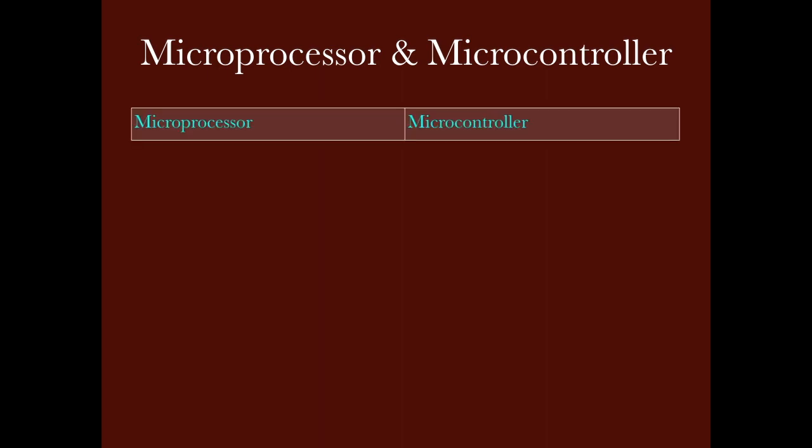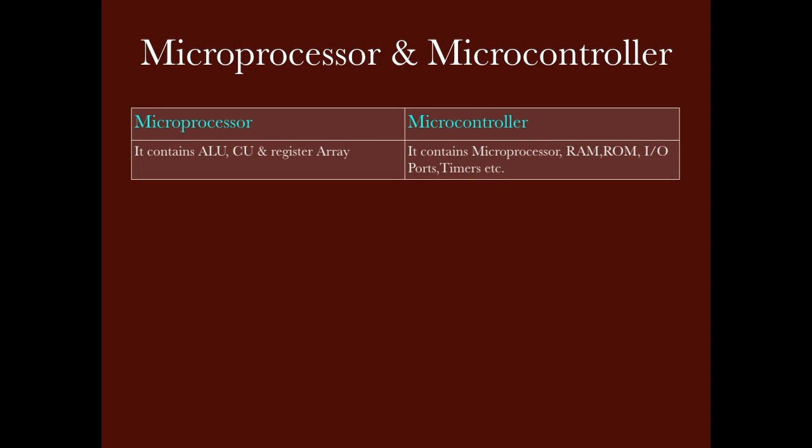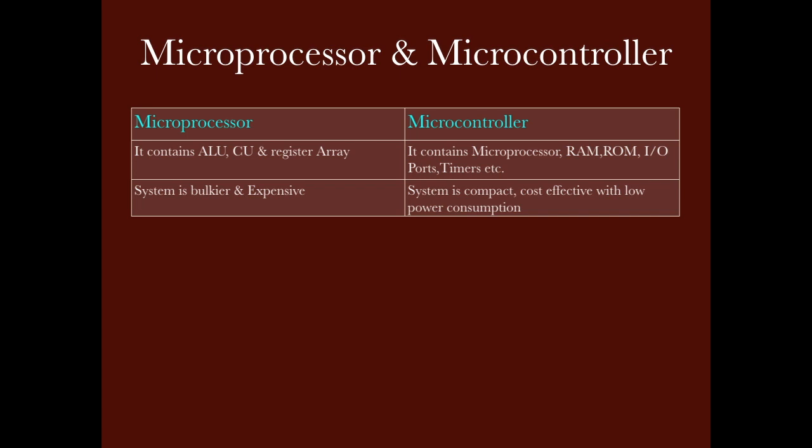Now, having seen both their relationships, let us compare the microprocessor and microcontroller. The first point of comparison: in a microprocessor, there is an arithmetic logic unit, a control unit, and a register array. In a microcontroller, the microprocessor is present and additionally RAM, ROM, I/O ports, timers — all these things are added. This is the hardware-wise difference.